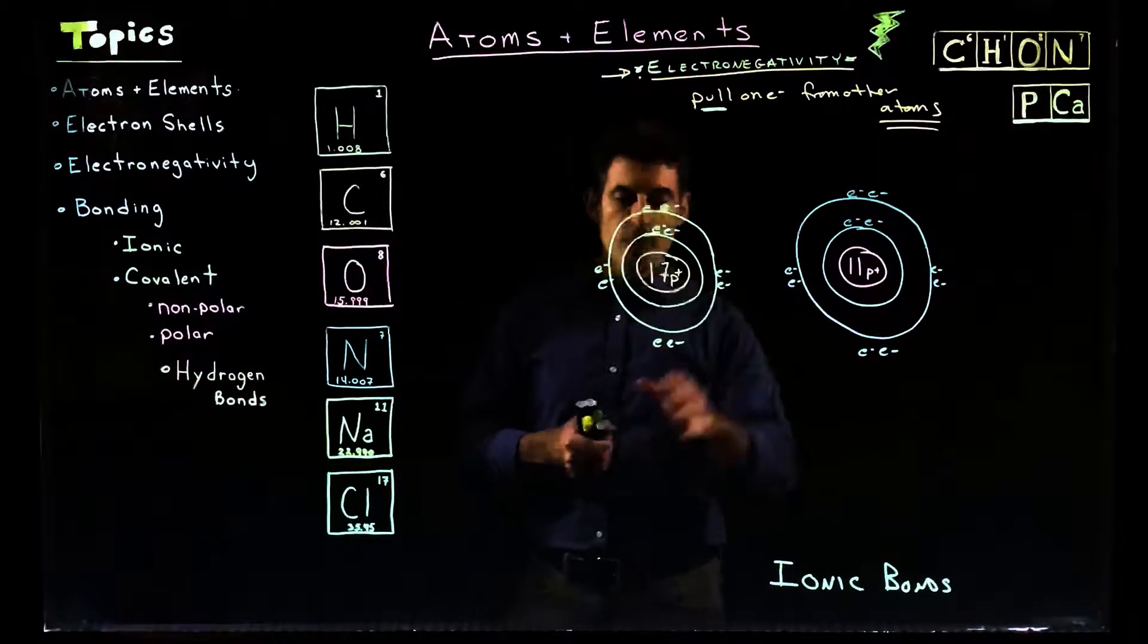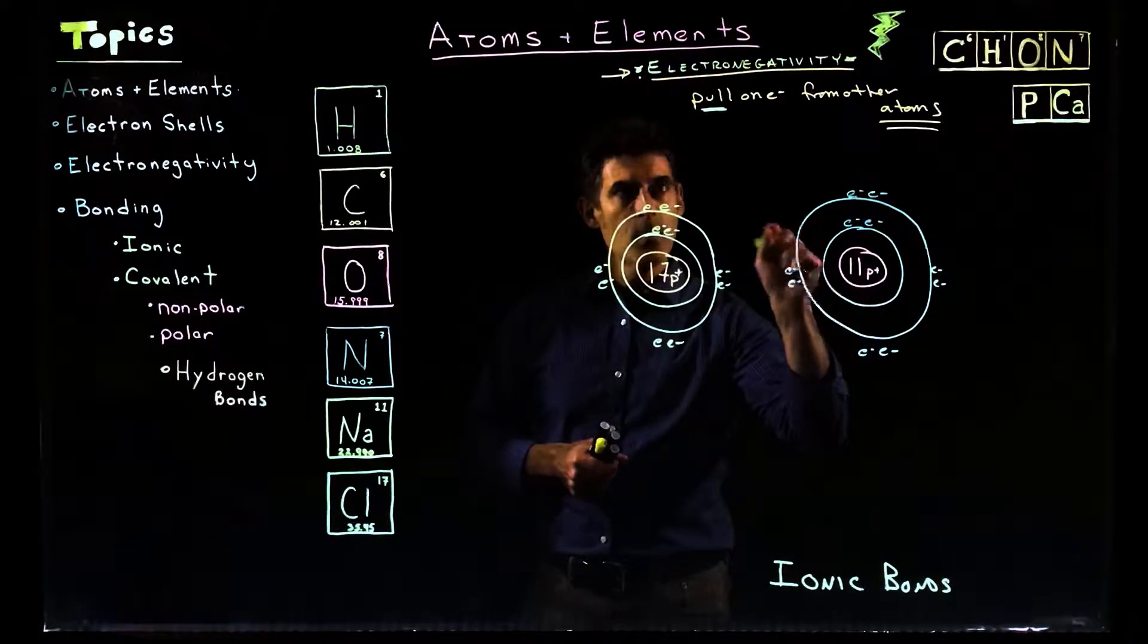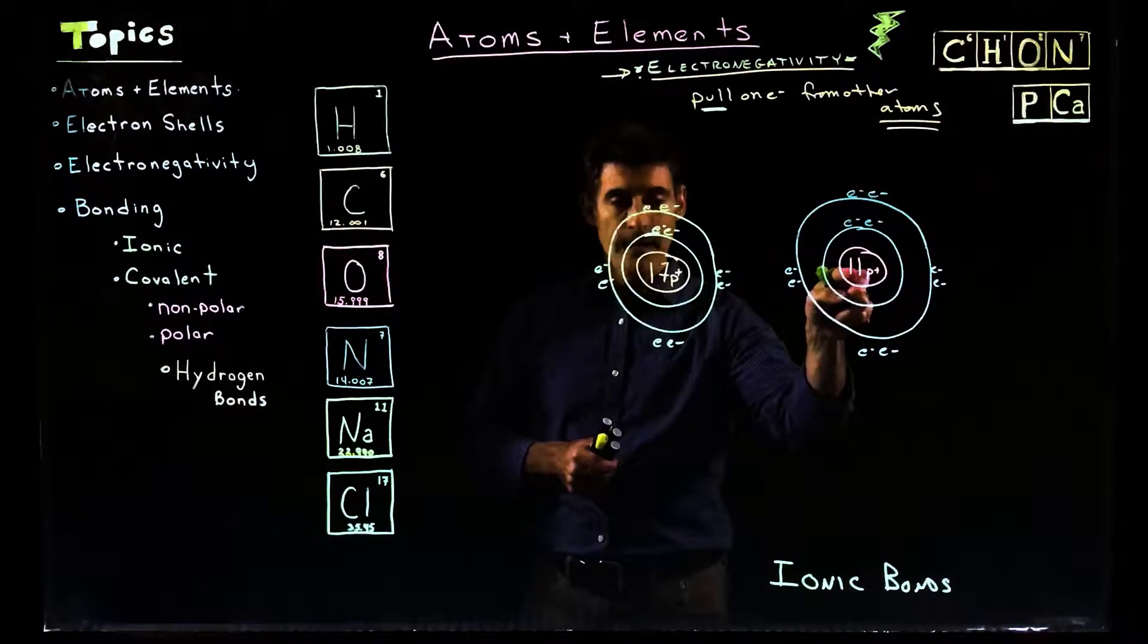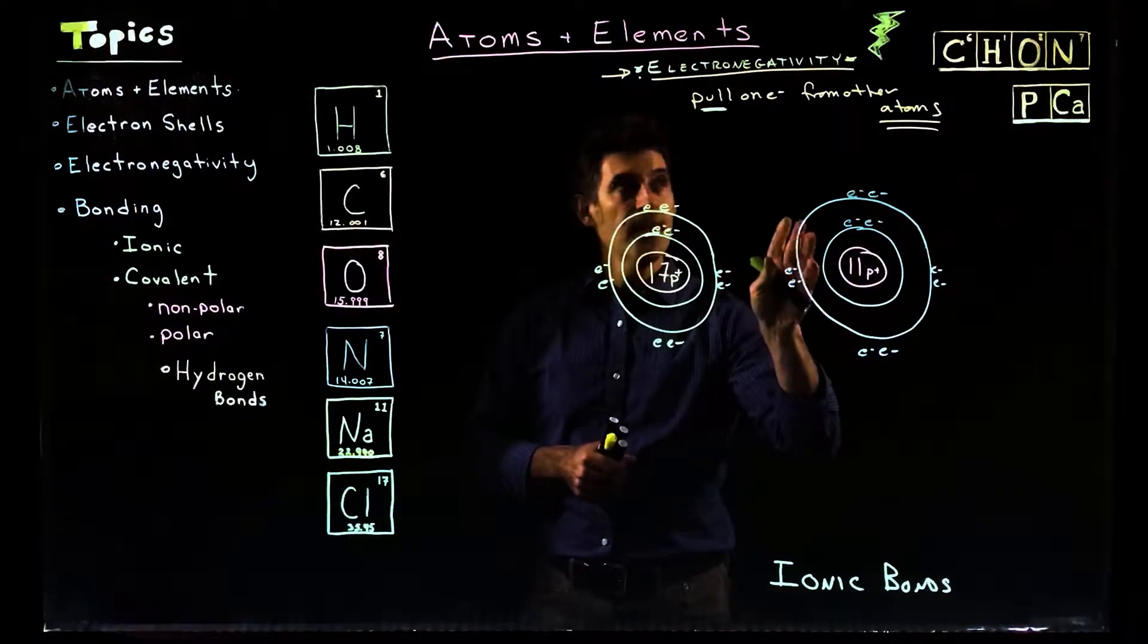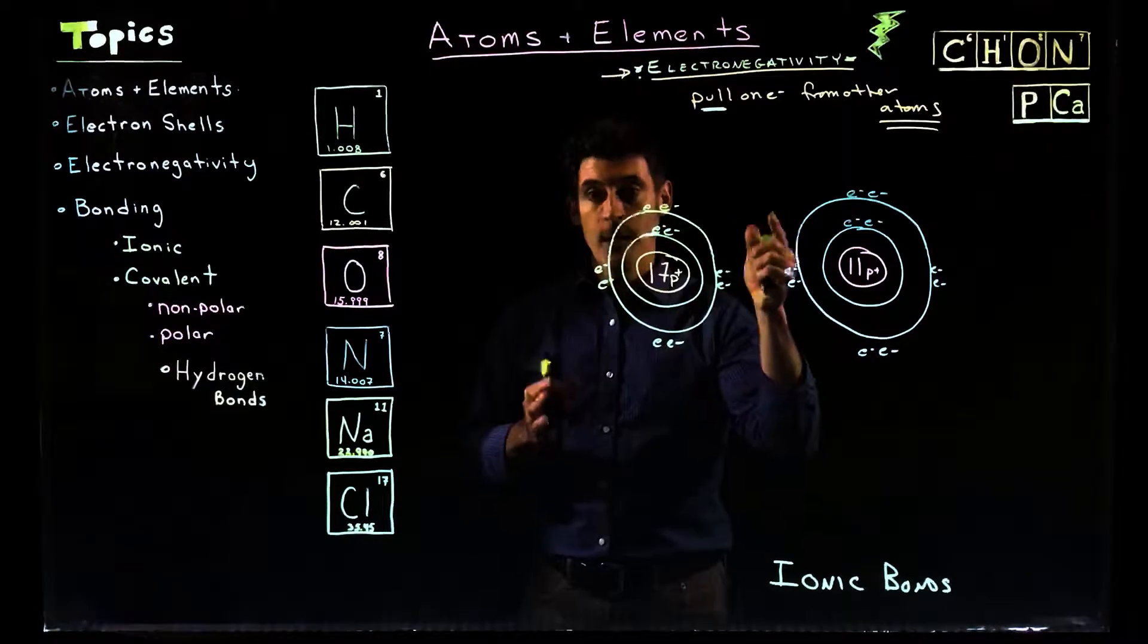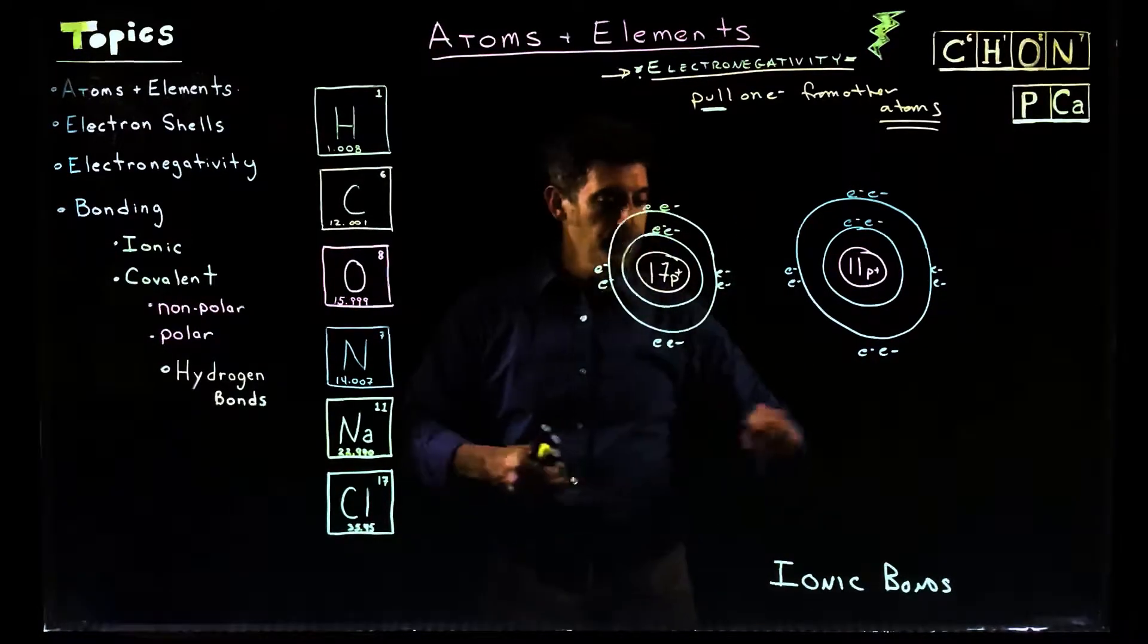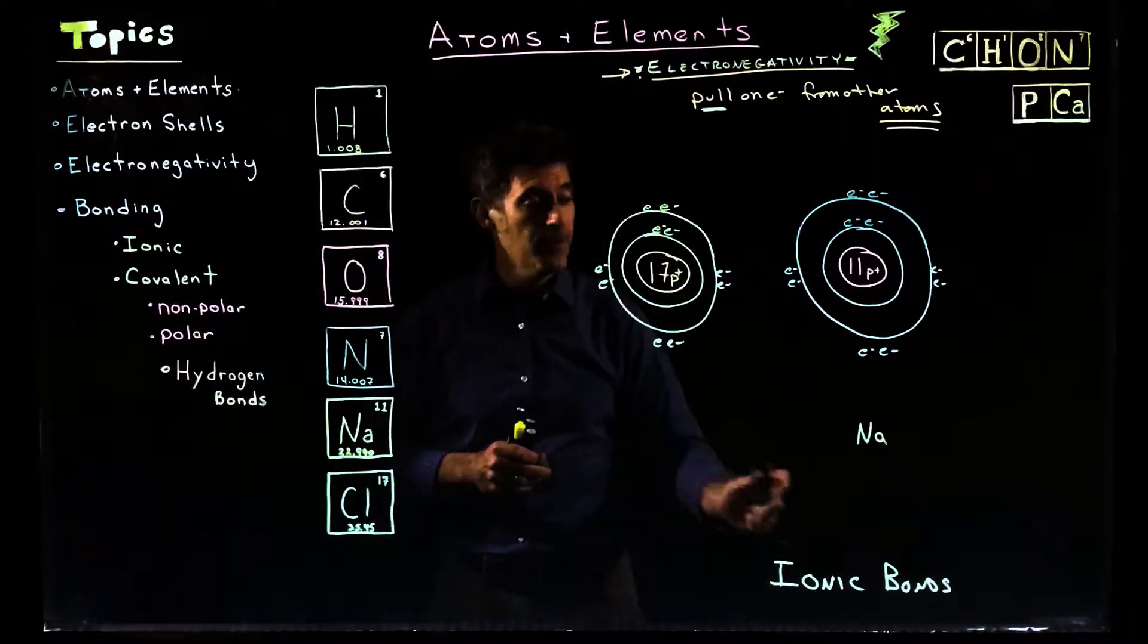So right now we have two elements up here. This over here has 11 protons in it. So by definition, the number 11 for protons defines the element. So if you wanted to find out what element is this, we'd look at the periodic table and find out which one is number 11. And that would be sodium. So this is sodium, or Na.